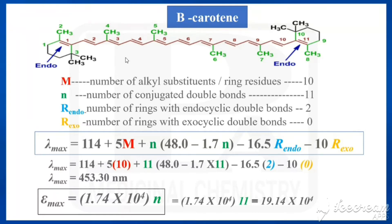In beta-carotene, there are 6 alkyl substituents. For the ring residues, each ring contributes ring residues — there are 4 ring residues in total. Therefore M = 6 alkyl substituents + 4 ring residues = 10.